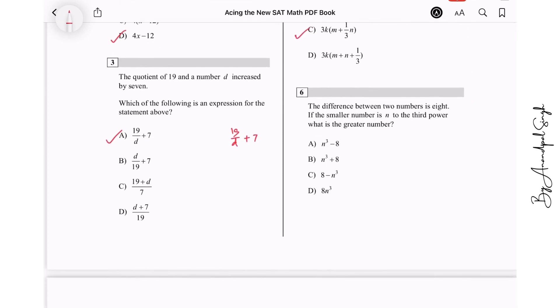The difference between two numbers is 8. If the smaller number is n to the third power, means the smaller number is n to the power 3, then the greater number or the bigger number will be 8 more than this. So n cube plus 8. We will go with option B.